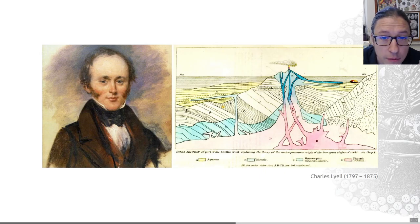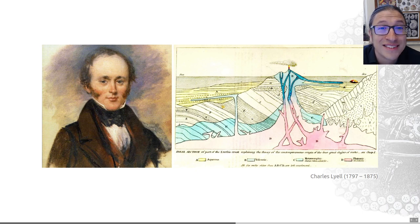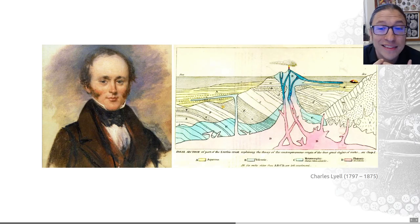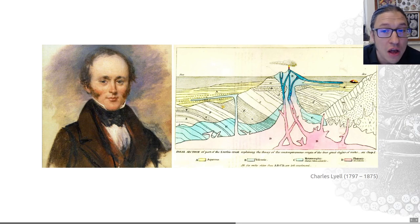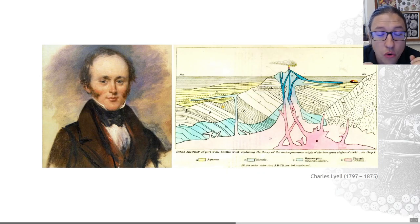He argued that, for example, volcanoes were the result of gradual processes and built up gradually, and he also identified the causes of earthquakes. All of this opened the door for slow-moving forces still in operation today to have acted over a very long period of time to create the geology we see today. This helped promote the idea of a very ancient earth, directly in opposition to catastrophism, and formed a framework for paleontological thought in decades to come — influencing prominent thinkers like Charles Darwin.